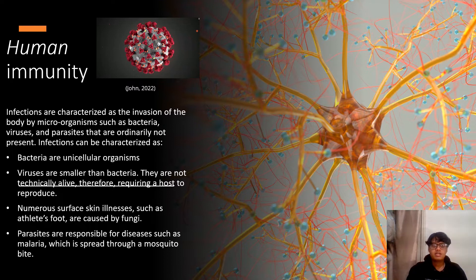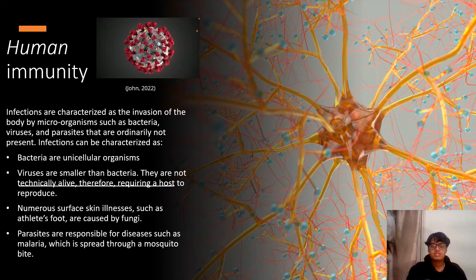Infectious diseases are categorized as bacteria, which are unicellular organisms; viruses, which are responsible for a wide variety of diseases ranging in severity from the common cold to HIV and AIDS; fungi, which cause infection of the lung and the nervous system; and parasites, which are responsible for diseases such as malaria, which spread through the mosquito bite.